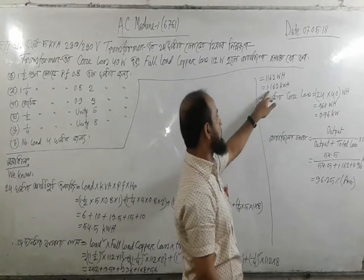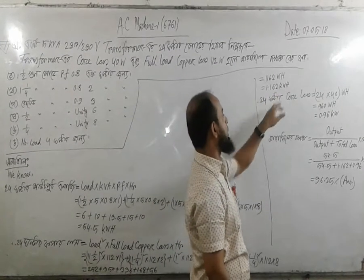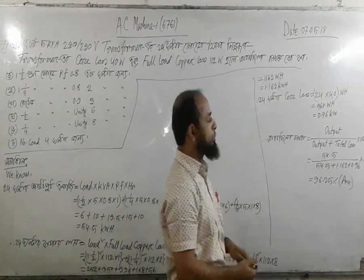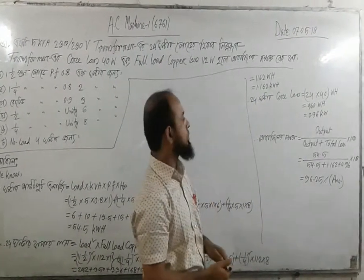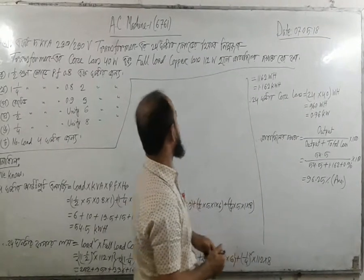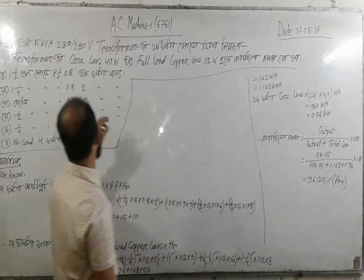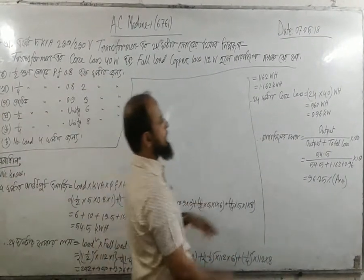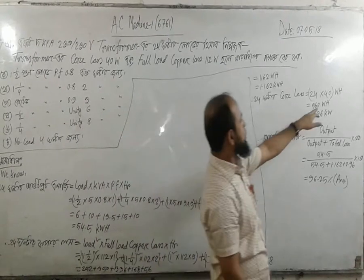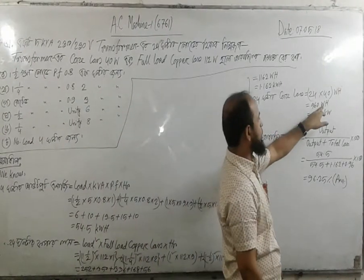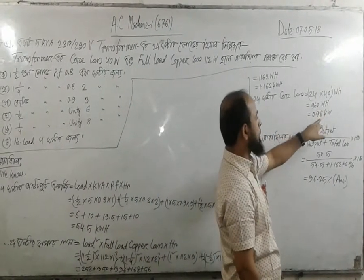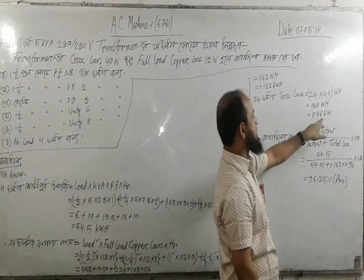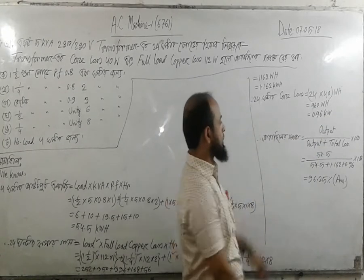The kilowatt-hour value: 24 into iron loss gives the iron loss component. The watt-hour result is 296, approximately 20 watt-hours. This is used as another factor in the efficiency calculation.